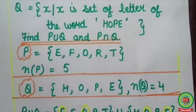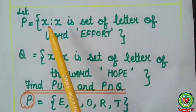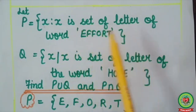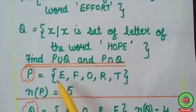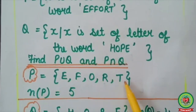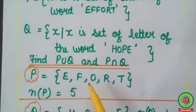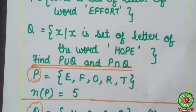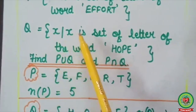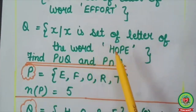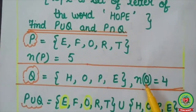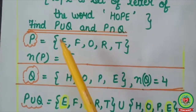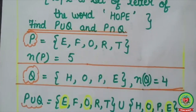Let's take one more example. Consider P = {x : x is a letter of the word 'effort'}. Since it is given in set builder form, I will convert it to roster form: P = {e, f, o, r, t} — since f appears twice, I write it only once — and its cardinal number is 5. Q = {x : x is a letter of the word 'hope'}, so in roster form Q = {h, o, p, e}, and its cardinal number is 4. We have to find P∪Q and P∩Q.